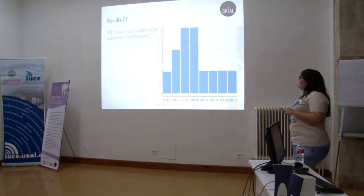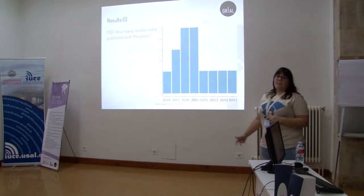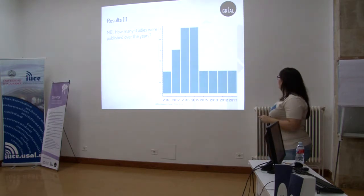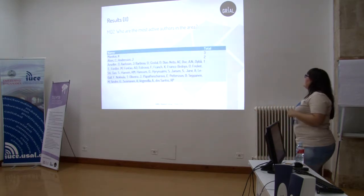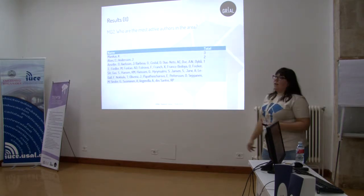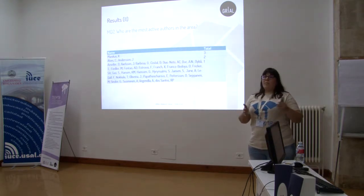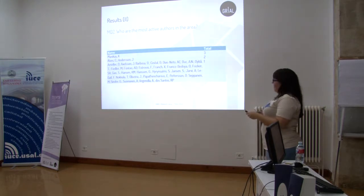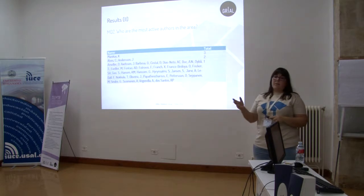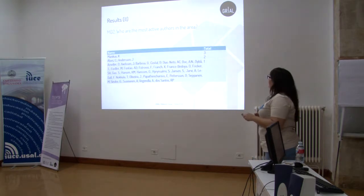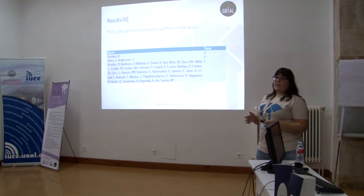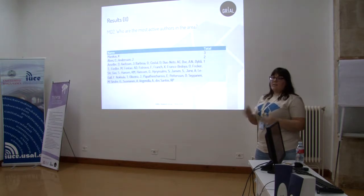Regarding the results: the first mapping question asked how many studies were published over the years — a typical question in a mapping study. The most productive years were 2015 and 2016. The second question asked who the most active authors in the area are. It is not typical to produce more than one systematic literature review on a particular topic, but there is one author, Manikas, who carried out three systematic literature review studies about software ecosystems, making him the first author to do this kind of work in this area.